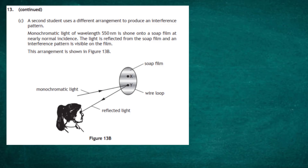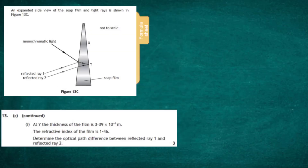Question 13 continued, Part C: a second student uses a different arrangement to produce an interference pattern. Monochromatic light of wavelength 550 nanometers is shone onto a soap film at nearly normal incidence. The light is reflected from the soap film and an interference pattern is visible. Nearly normal incidence means the monochromatic and reflected light are very close together — the angle is near zero. Figure 13C shows an expanded side view with reflected ray one and reflected ray two.